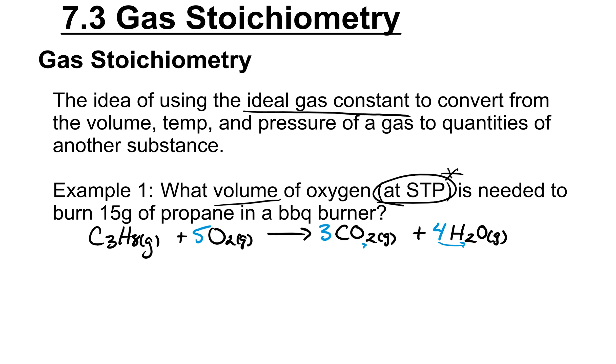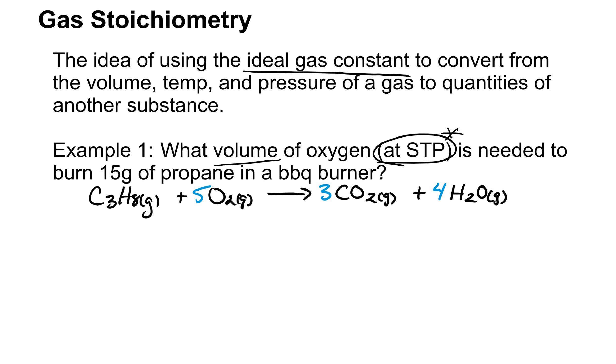So now that we have our balanced chemical reaction, we can get into building our puzzle pieces below the reaction. From the question, it's looking for a volume of oxygen, so I'm going to put V question mark. It's needed to burn 15 grams of propane, so the mass of propane is 15 grams of C3H8. It's really important, I cannot stress this enough, that we label our values. So it's not 15 grams of anything, it's 15 grams of propane. That's really going to help us when we set up our stoichiometry equation.